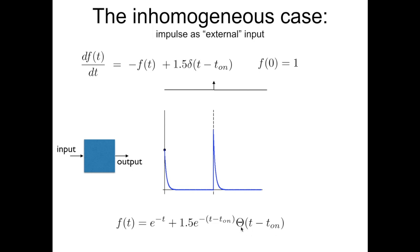I used the Heaviside step function to characterize that, yes, it's an exponential, but prior to t_on there is nothing — it has to be zero. So it's not enough to write 1.5 times exponential of minus (t minus t_on); you also have to specify by multiplication that whatever was before is zero. This is the graphical representation: there is a sudden increase in the input, and the system responds and then discharges again. This is the formal mathematical way to describe the solution.